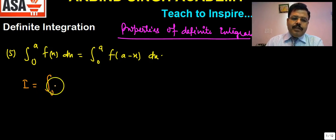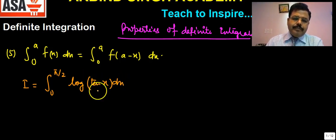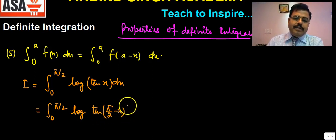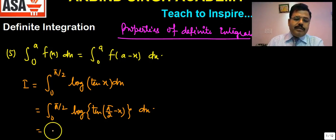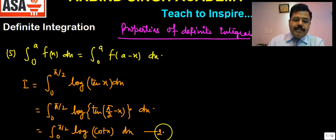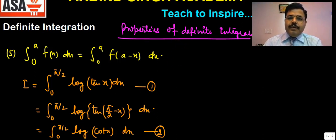To connect that property, let me give one more question: evaluate the integral from 0 to π/2 of log(tan x) dx. Applying the fifth property, the integrand becomes log of tan(π/2 - x), and since tan(π/2 - x) equals cot x, we get the integral from 0 to π/2 of log(cot x) dx. Call this result I. Now adding the two forms of I.